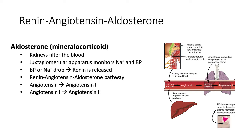Angiotensin 1 then continues to circulate in the blood until it meets another enzyme, angiotensin-converting enzyme, or ACE, in the lungs. ACE will convert angiotensin 1 into angiotensin 2.